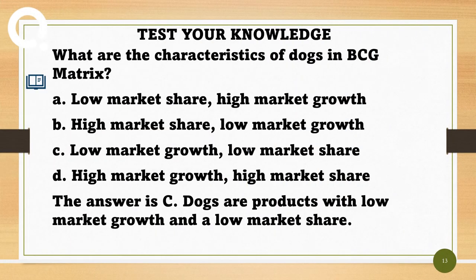What are the characteristics of Dogs in the BCG matrix? A. Low market share, high market growth. B. High market share, low market growth. C. Low market growth, low market share. D. High market growth, high market share. The answer is C. Dogs are products with low market growth and a low market share.